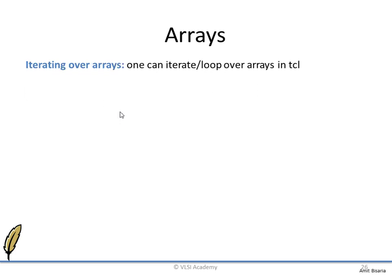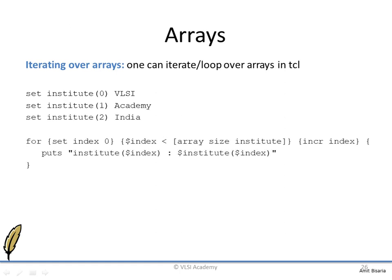Now this is how we iterate over the array. Iterating over an array is very similar to what we do in C — using loops. Here we will use a for loop. First, we define the array: set institute(0) VLSI, first index Academy, second index India. Then we loop: first we set the initial value of our index to 0, and we say that until this index reaches the array size, it should keep looping and increment by 1 after every execution.